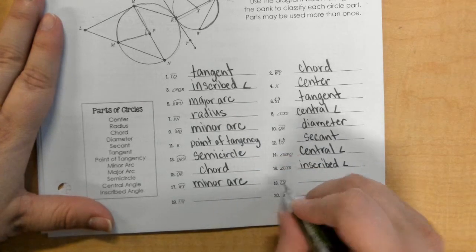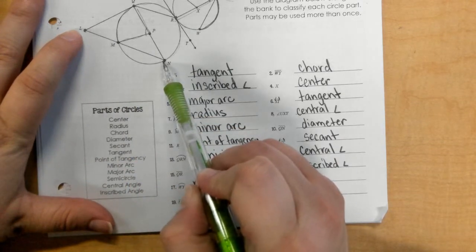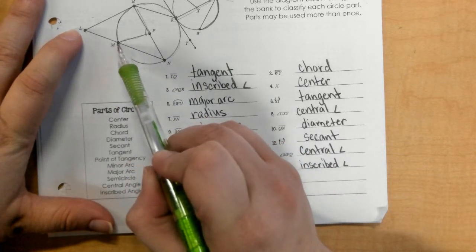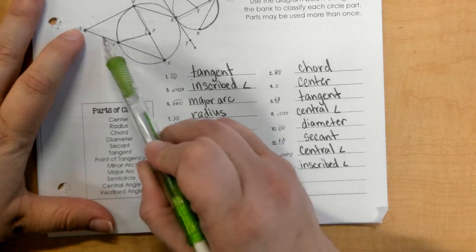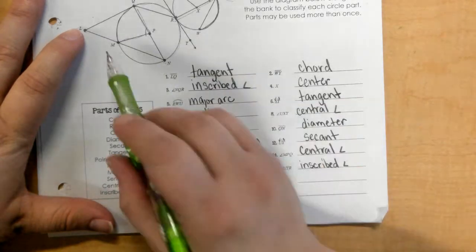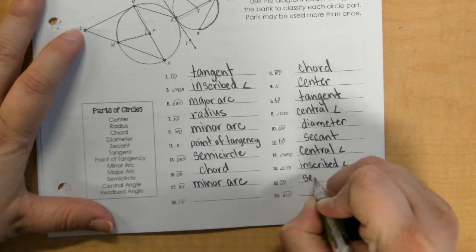Segment LN. Okay, this is a secant. It does have, it is a line segment, but we see that we have part of this segment that's on the outside of the circle, and because it goes through the circle and touches two points, it is definitely a secant.